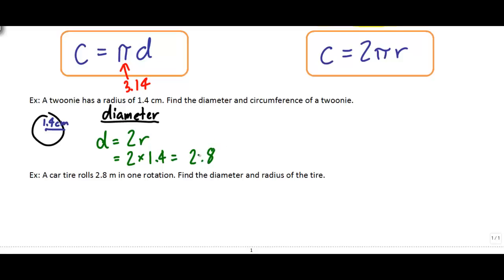2 times 1.4 is 2.8. Now it's really important that if you leave this as your final answer, that's not going to get you full marks. And the reason is because this is an actual physical thing. This toonie has a radius of 1.4 centimeters, which means the diameter is a diameter of 2.8 centimeters. So really important. Don't forget your units here in your final answer. We're going to see that a lot. Okay, now we need to find the circumference.